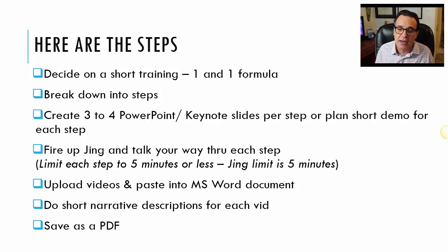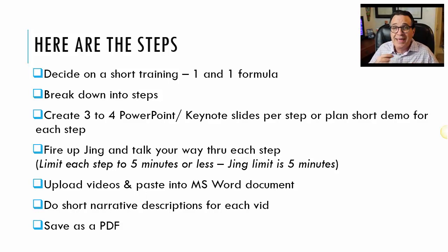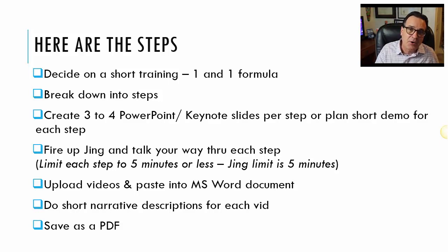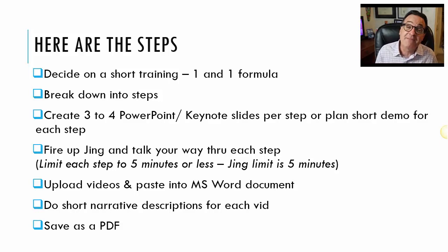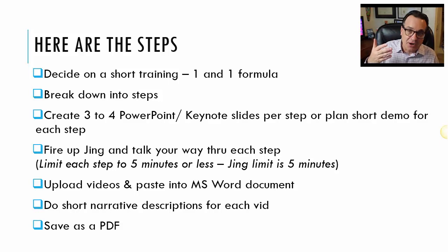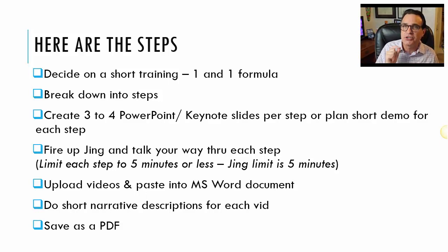Then you're going to fire up Jing. Once you have your steps in a PowerPoint slide or some kind of slide, you're going to fire up Jing and basically talk your way through each one of the steps. Very important point: with Jing, you have a five-minute limit per video. You have to make sure that what you have to say for each step fits in just five minutes. If that means you need to break one step into three steps, so be it. The shorter you can keep your steps, the more likely it is that your buyer will actually get through the product. Give them just the meat.